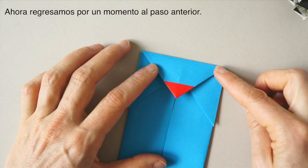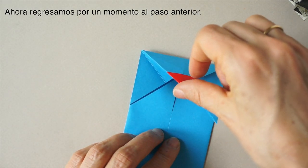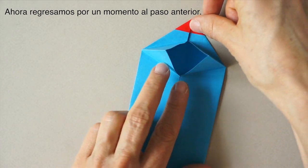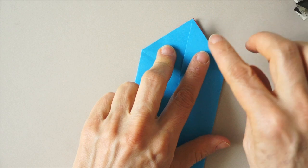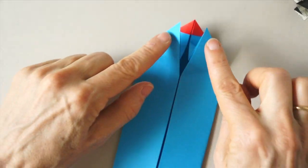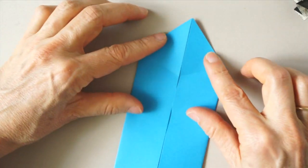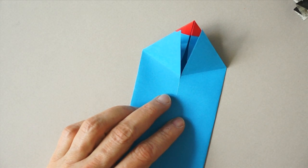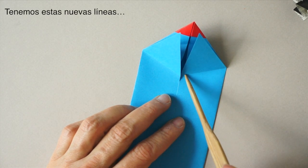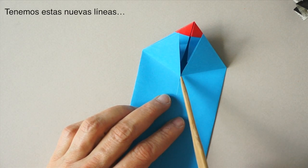Hold in place with my thumb and push in this area so that I can flatten. At this point, we are going to go back to our previous step. We just push from here and flatten these tips. We have these new lines here and we have this central point.